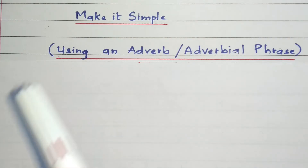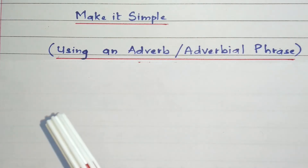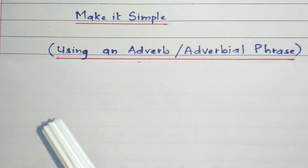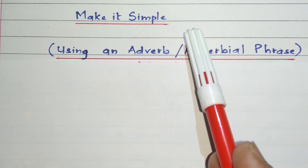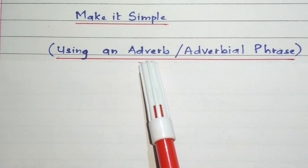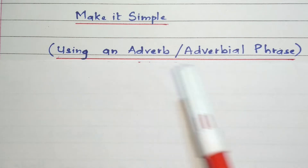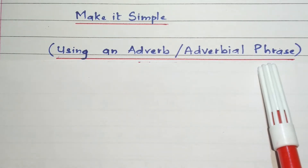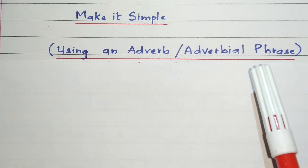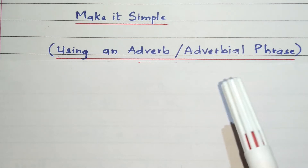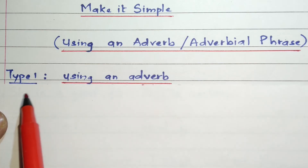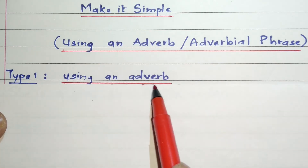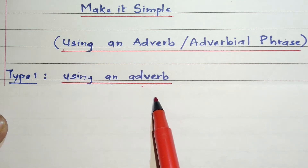Hello friends, welcome to my YouTube channel. This is the sixth part of the video series on Make It Simple. In this video, we will use an adverb or an adverbial phrase in order to make a simple sentence. So let's start. In the first part of the video, we will use an adverb to make a simple sentence.